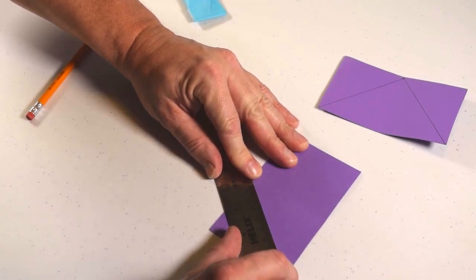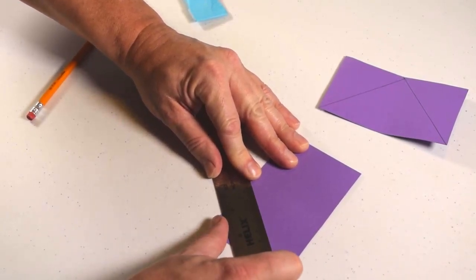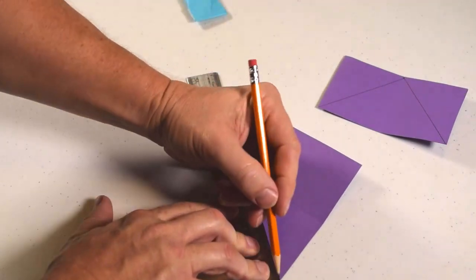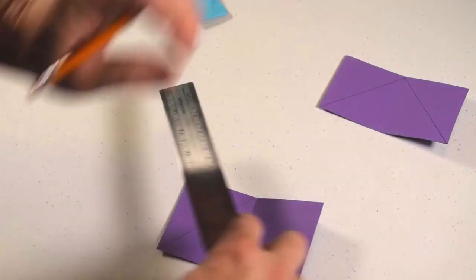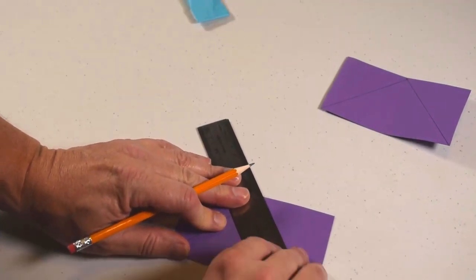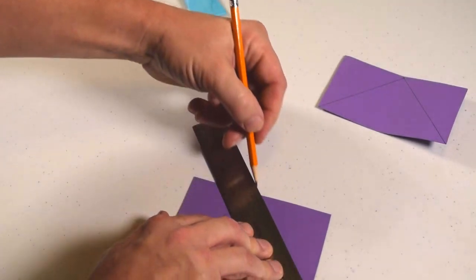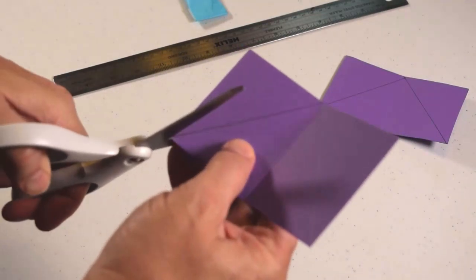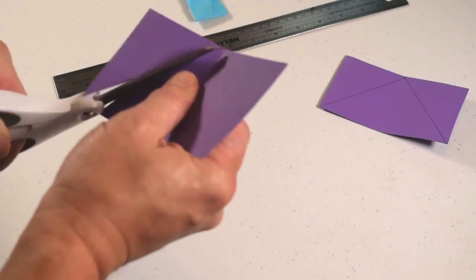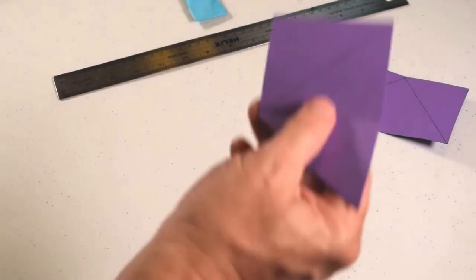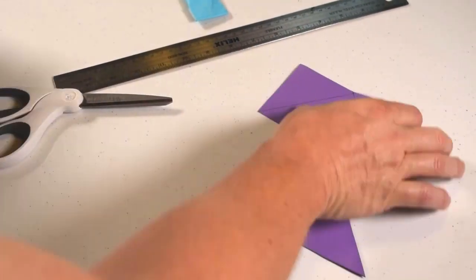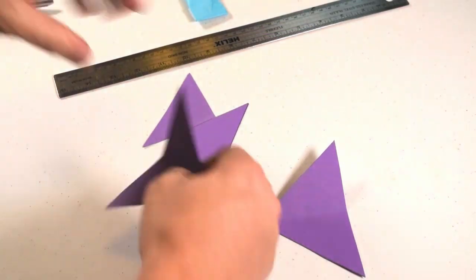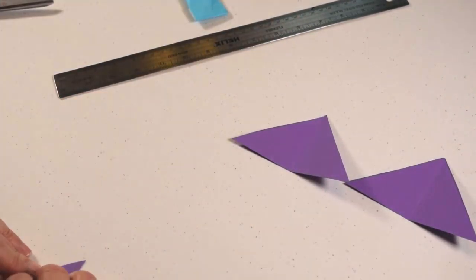Looks like we're making a triangle, and really we are, and we're going to split that triangle into two to make fins for our rocket. Now I'm ready to cut these off. Be careful when you're using your scissors or have an adult help you.